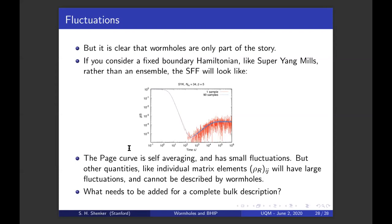And so this leaves us with this question, what needs to be added to this bulk gravitational description to describe, for instance, this erratic red curve or the fluctuations in this. And we don't know the answer to this, but it's a subject that preoccupies many of us. So with that, I think I'll stop. And I'll take as many questions as I'm able to handle.